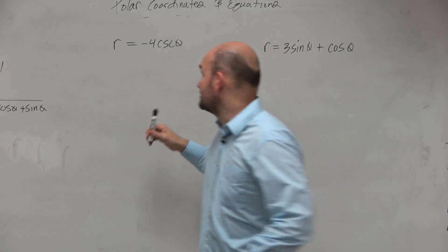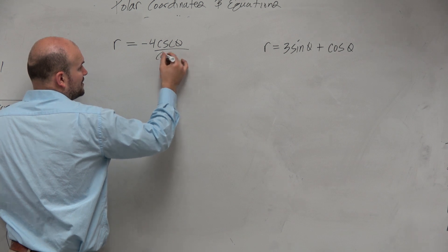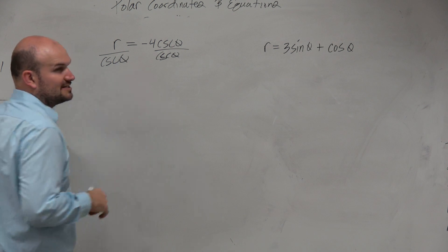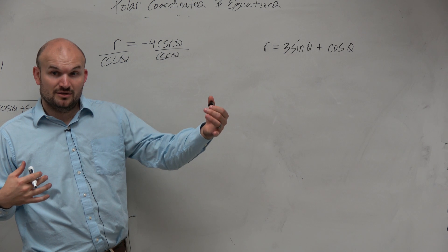Well, let's think about this. If I get the cosecant and the r together, let's divide by cosecant on both sides. Now, dividing by cosecant is the same thing as multiplying by its reciprocal.